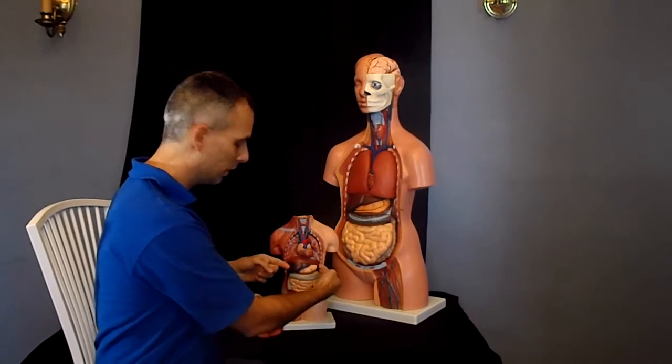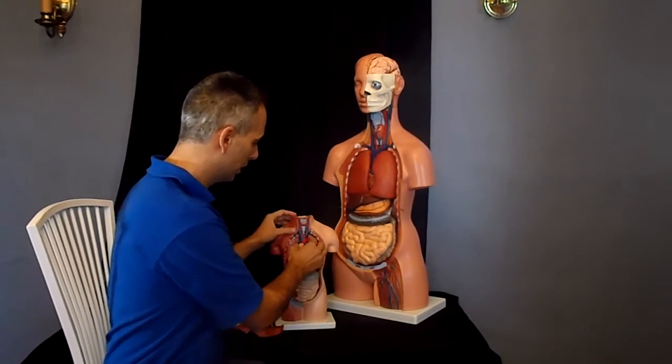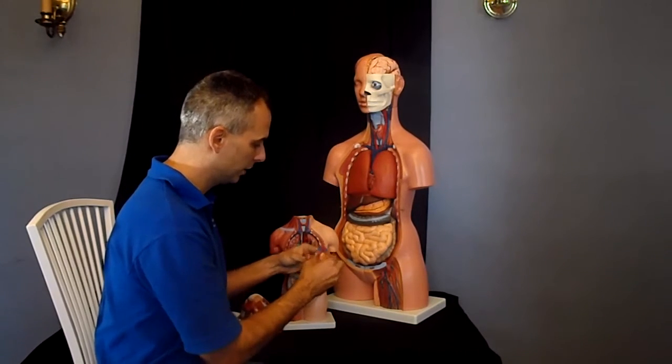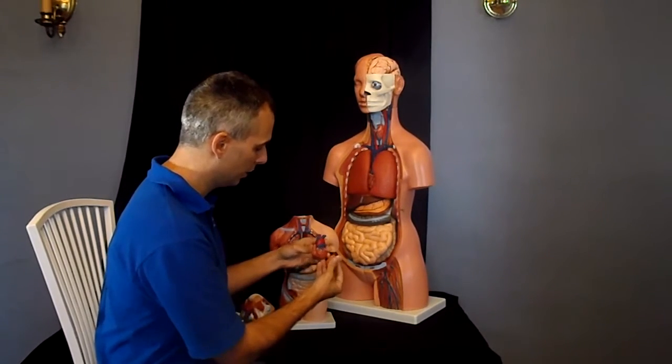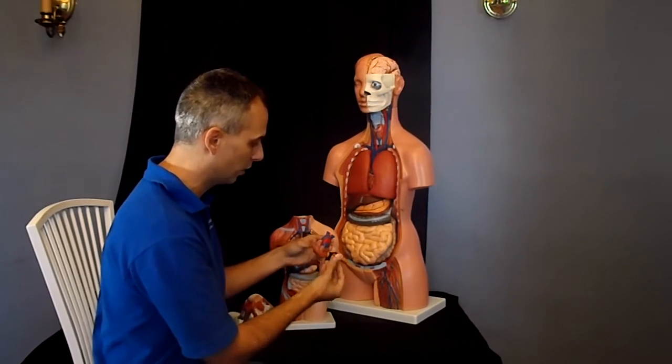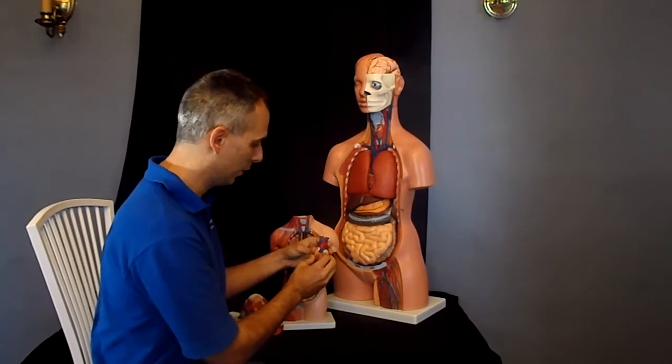Removing the first two surface parts of the lungs gets us to the heart, and like the large model, the heart here has a removable front to show us the upper atria and the lower ventricles, as well as the major veins and arteries that are coming in and out of the heart.